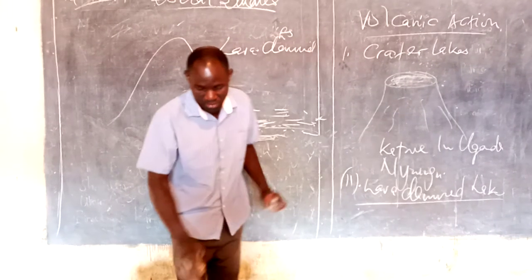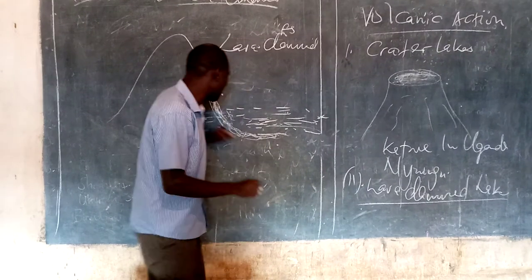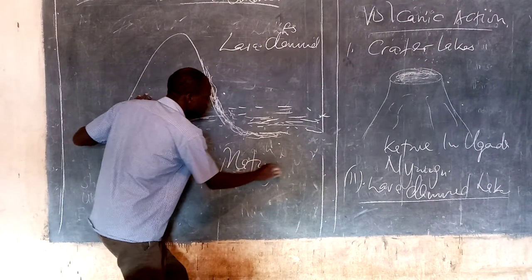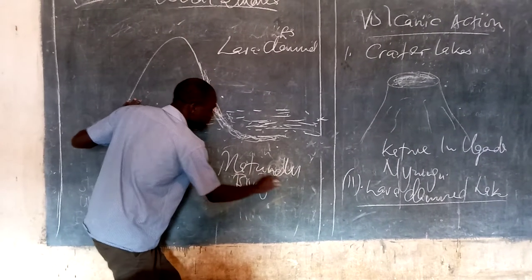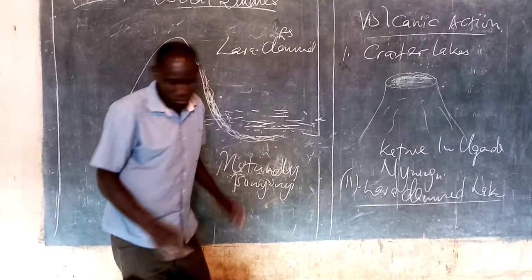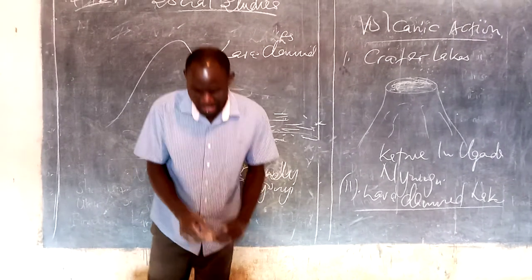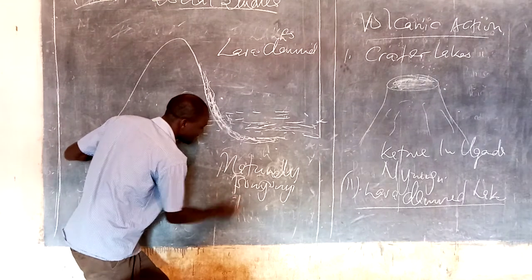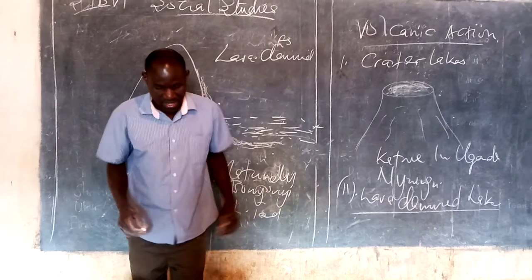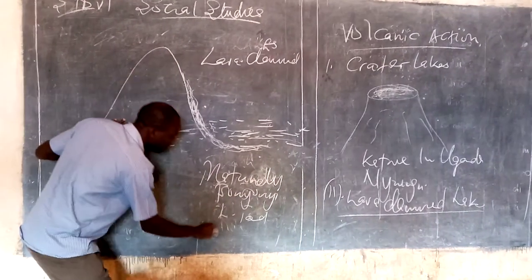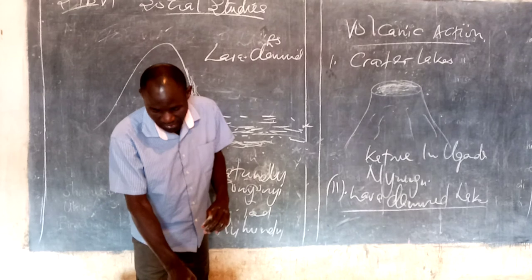Examples of lava dam lakes found in Uganda include Lake Mutanda, Lake Bunyoni, and Lake Kivu. In Ethiopia we have Lake Tana, and Lake Ruhonu in Rwanda. Those are examples of lava dam lakes.